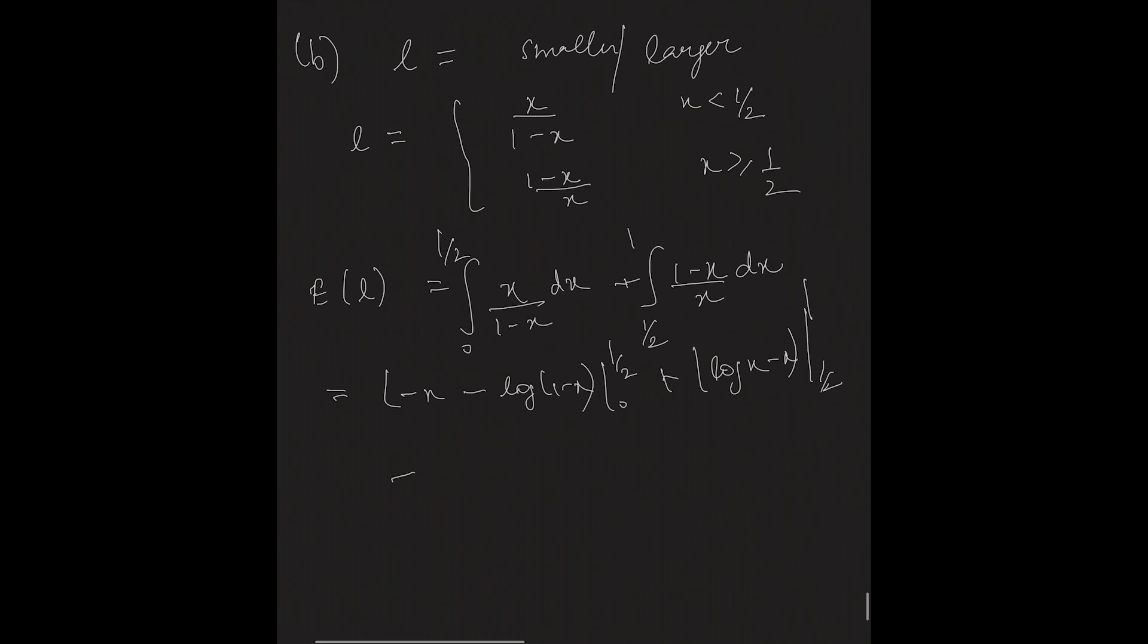Substituting the values, we will get log 2 minus half plus log 2 minus half, which is equal to 2 log 2 minus 1.